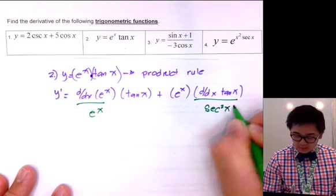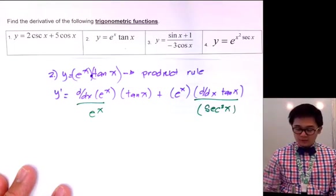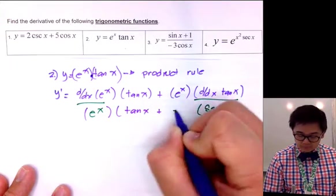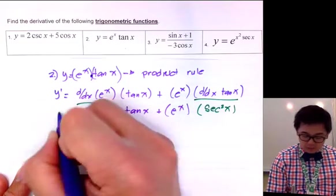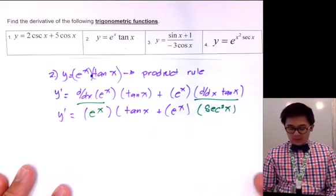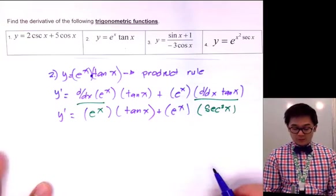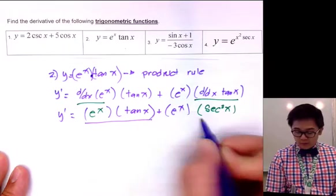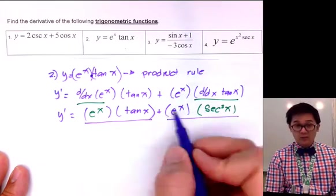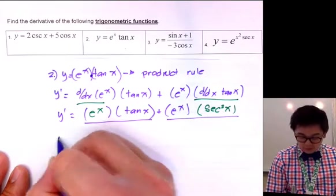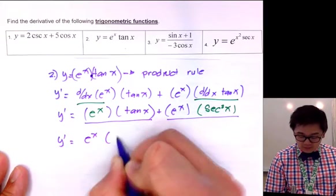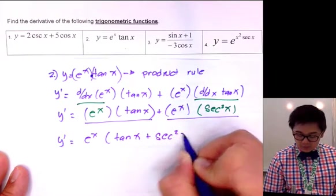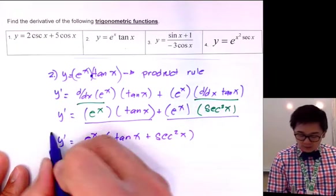Now that we have found the derivative, we copy the rest of the function to get y prime. Since our first term and second term have a greatest common factor of e to the x, we can factor it out to get e to the x times the quantity tangent x plus secant squared x, just to clean it up. This is the derivative of problem number two.